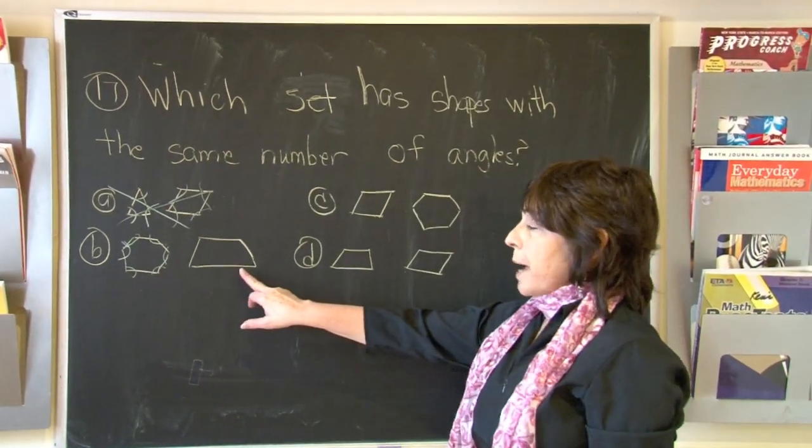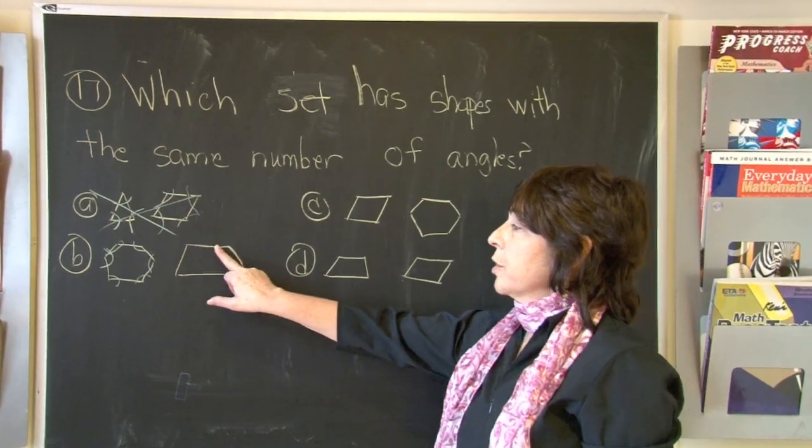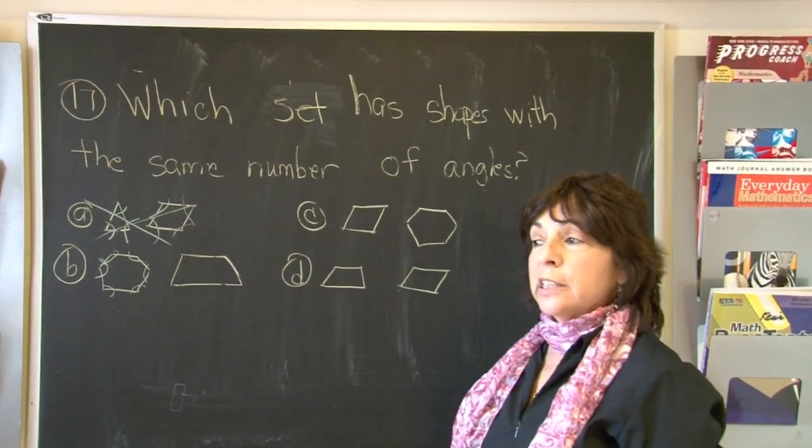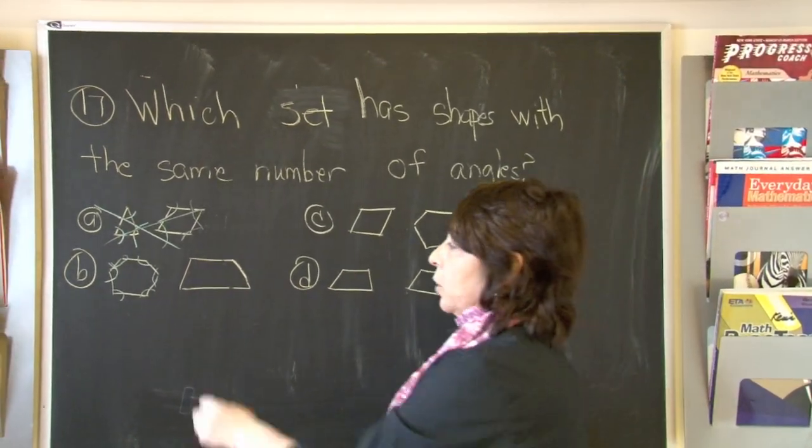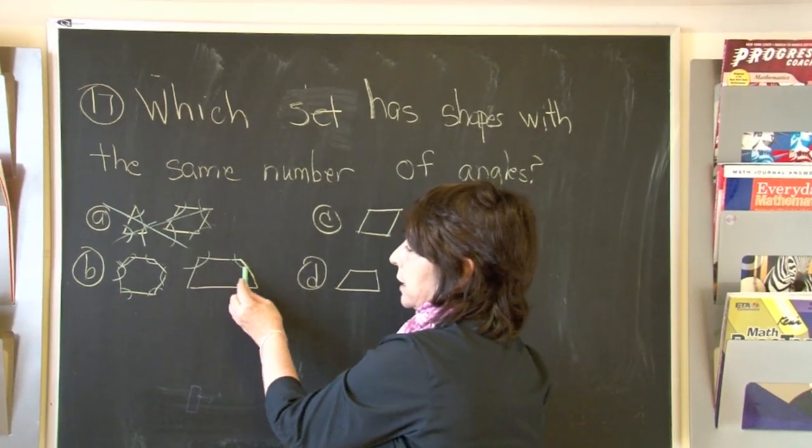Now let's look at the trapezoid. One, two, three, four. Since there are only four sides, there will only be four angles. Because again, angles are formed at the corner when the line segments meet.